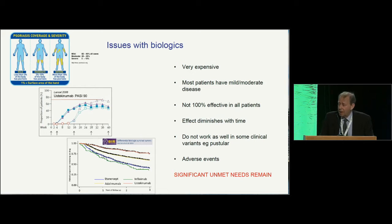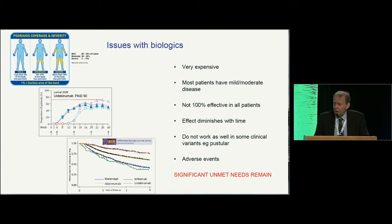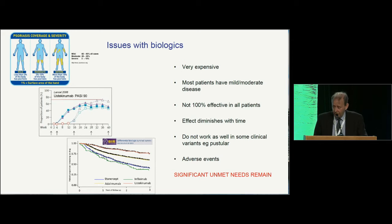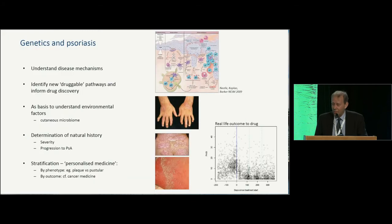But biologics are not the answer to everything. They are very expensive. Most patients have mild to moderate disease. Even the market leaders are not 100% effective 100% of the time. As we've shown through our national registry in the UK, drug survival curves are not a flat line — there's about a 15% drop-off per annum. They are not so effective in clinical variants, and there are adverse events associated with them. So there is a significant unmet need remaining, and genetics can help a lot with this.